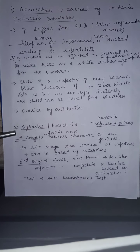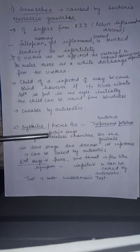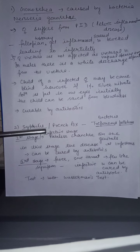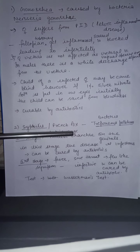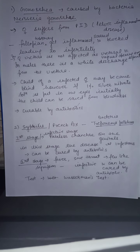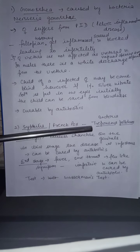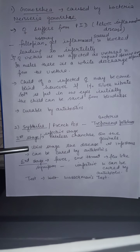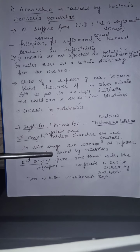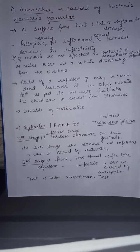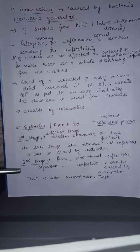Syphilis occurs in different stages. The first stage is the infective stage — a painless canker or boil-like structure will appear on the genitals. In this stage the disease is infectious. It can be cured by giving antibiotics; generally penicillin is used to cure syphilis.